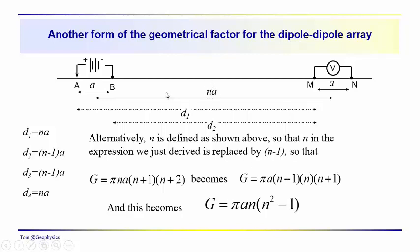Now, there's another way to set this up. We can define n as a multiple of a. We can define this distance from this current electrode to this potential electrode as n minus 1 a. But defining it this way, we have d1 is basically this line, which is the distance from the center of the current electrodes to the center of the potential electrodes, as na.